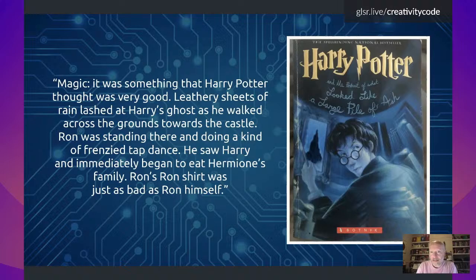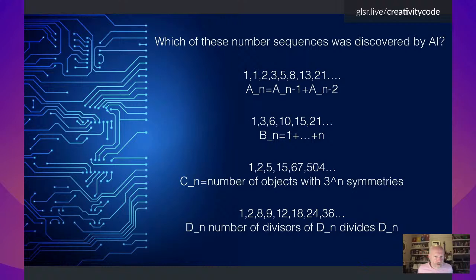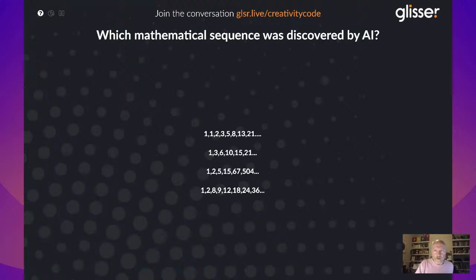AI seems to have a lot of difficulty going beyond just simple bits of mathematics — it's not good at telling stories and mathematics is all about telling stories. Here's your last challenge: four sequences of numbers, and one was discovered by artificial intelligence. Is it A: 1, 1, 2, 3, 5, 8, 13, 21? Is it B: 1, 3, 6, 10, 15, 21? Is it C: 1, 2, 5, 15, 67, 504? Or is it D: 1, 2, 8, 9, 12, 18, 24, 36? Probably if you're members of the Oxford Scientific Society, two of these should be fairly easy to recognize as historically discovered by humans. The majority are going for the last one.